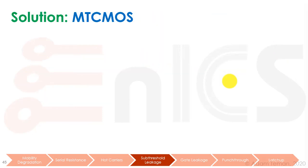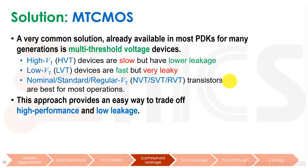The first solution is MT-CMOS, or multi-threshold CMOS. It's been common in PDKs for a long time — we supply several types of devices where each device has a different threshold voltage. We use names like HVT (high VT), LVT (low VT), and NVT/SVT/RVT for nominal/standard/regular VT. We may have five, six, or more types of PMOS and NMOS transistors. The higher the VT, the slower but lower-leakage the device. The smaller the VT, the faster but much leakier — sometimes orders of magnitude higher leakage than high VT or standard VT transistors.